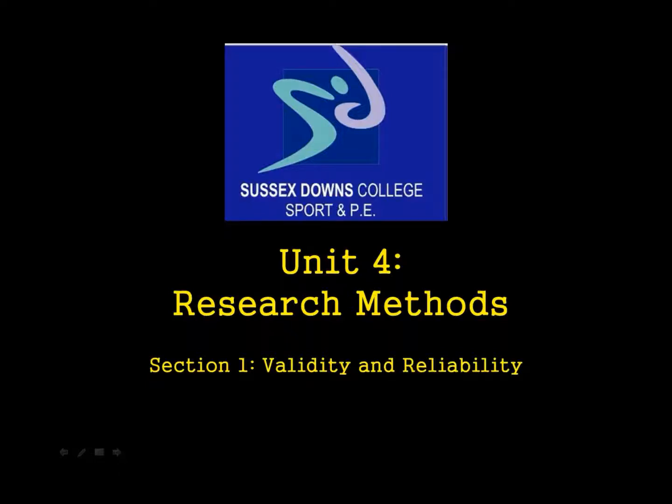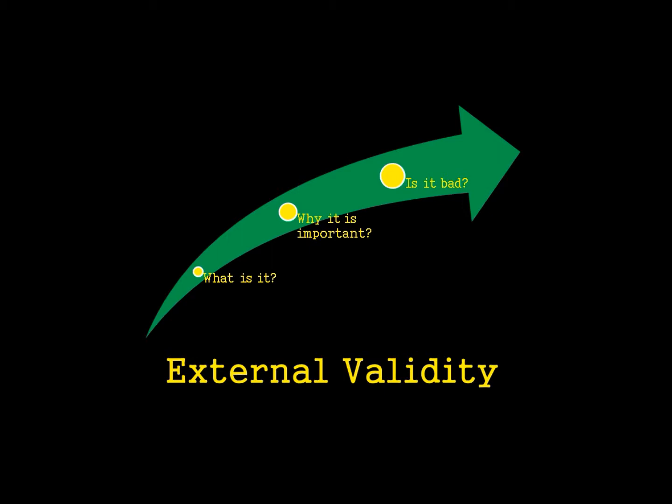Unit 4 Research Methods, Section 1: Validity and Reliability. Today's screencast is concerned with external validity. In particular, we're going to discuss what it is, why it is important, and ultimately what that means.